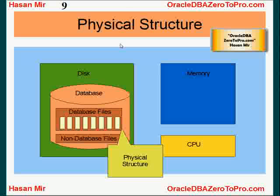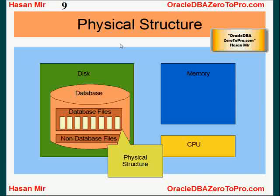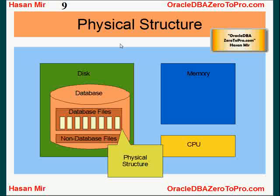Let's talk about physical structure. All these database files — this collection of database files — have a physical structure. They can be broken down into separate files, for example: data file 1, data file 2, data file 3, redo log file 1, redo log file 2, archive log file 1, etcetera. So this whole collection can be broken down into physical units.